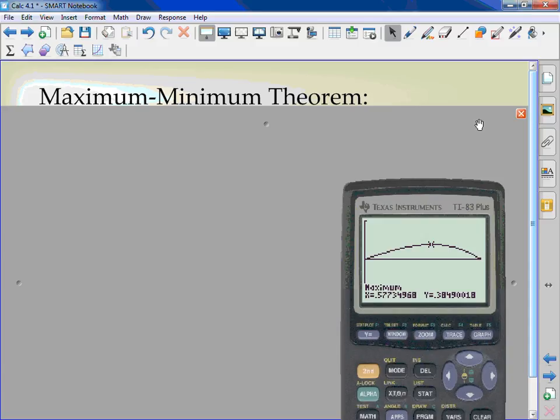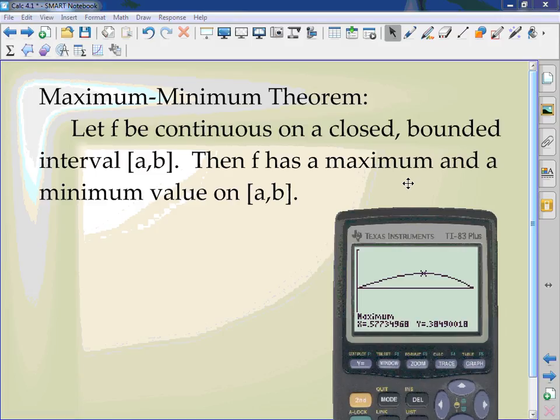That's my maximum value. The max min theorem. It's just putting it into words. Let the function f be continuous on a closed bounded interval. We just looked from 0 to 1. That was a closed bounded interval. You might have, or then you have a maximum and a minimum value on AB. There's always a maximum. There's always a minimum.